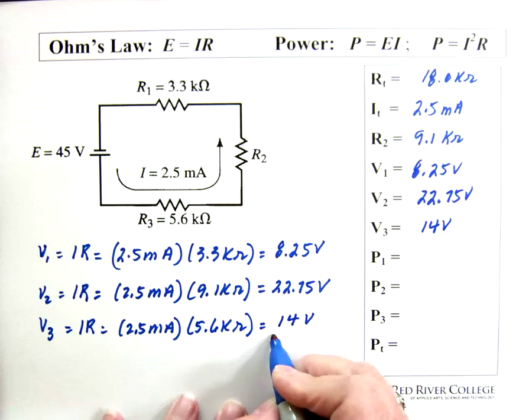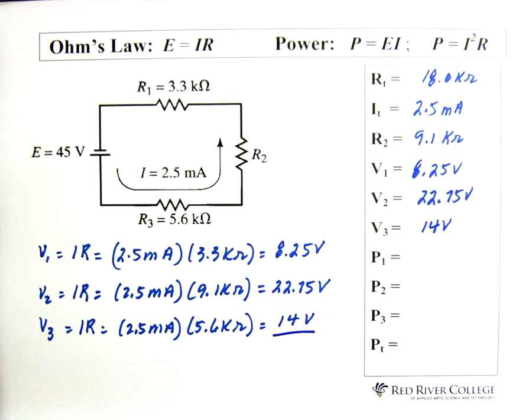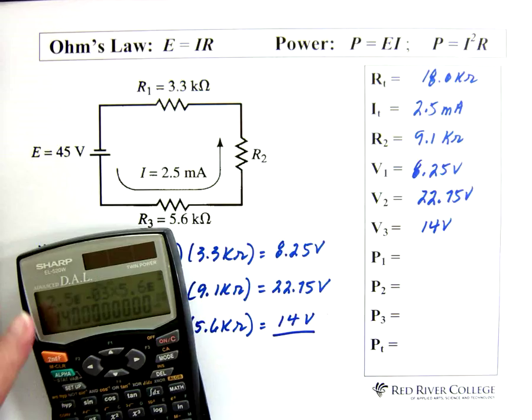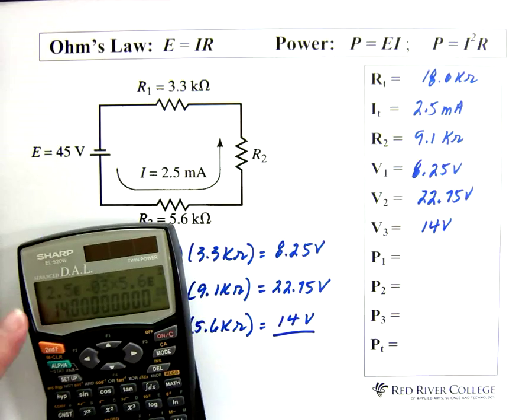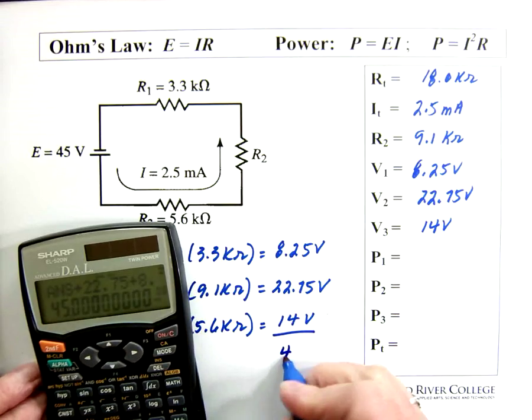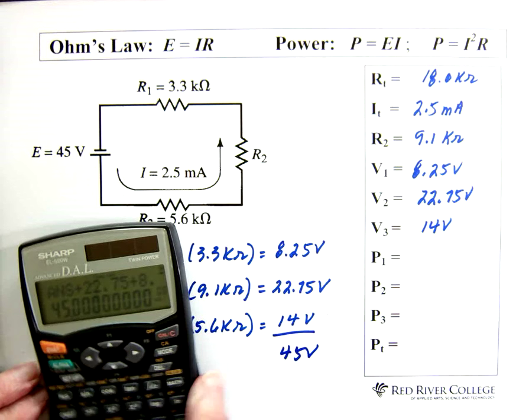Now, all of these voltages have to add up to what? They have to add up to the total voltage. If they haven't, we've made a mistake. Or I have made a mistake. So I already have 14 in my calculator. I'm just going to add 22.75 plus 8.25 equals. Happily, it equals 45. And that's exactly the way it should be.